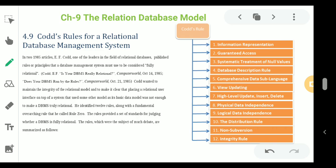Rule 2 is the Guaranteed Access Rule. All data should be accessible without ambiguity. This can be accomplished through the combination of table names, primary keys, and the column name. The primary key concept will be discussed in later sessions.